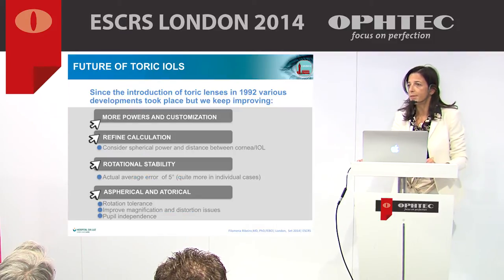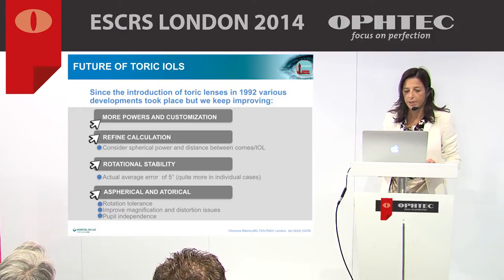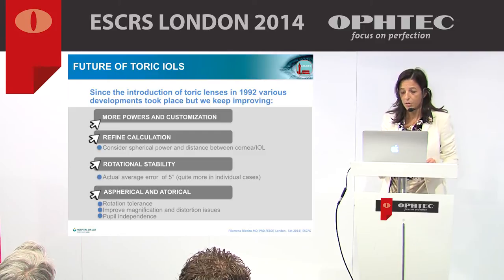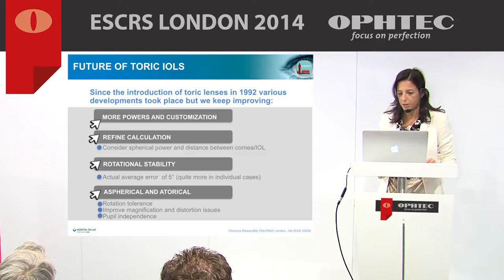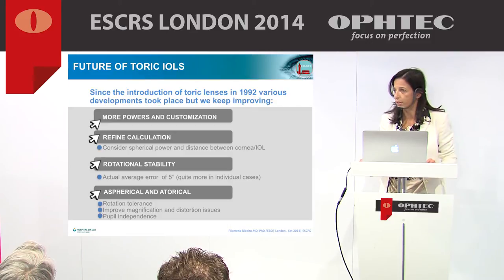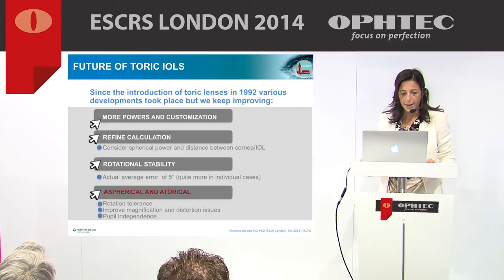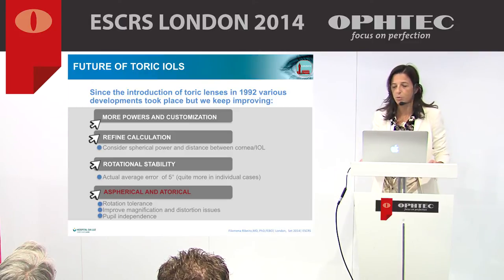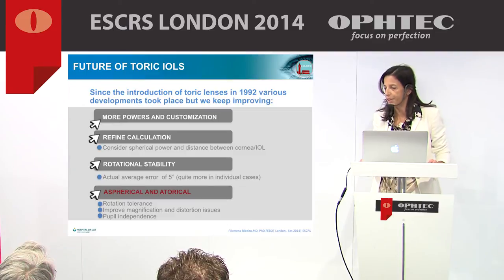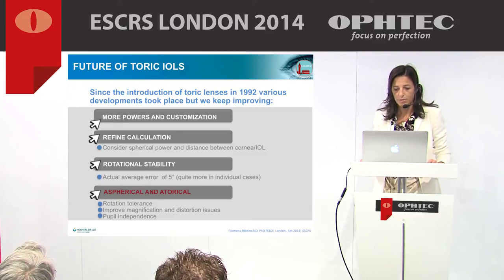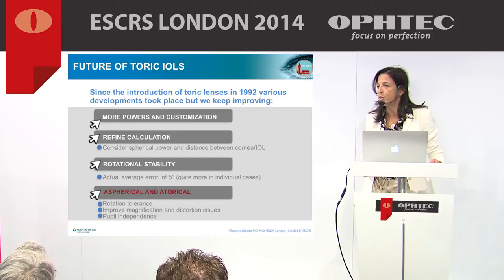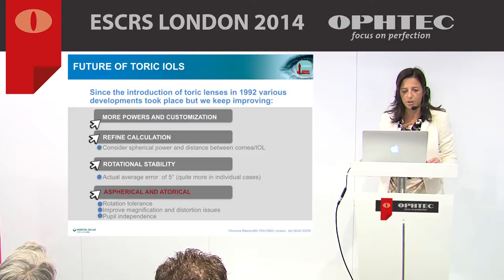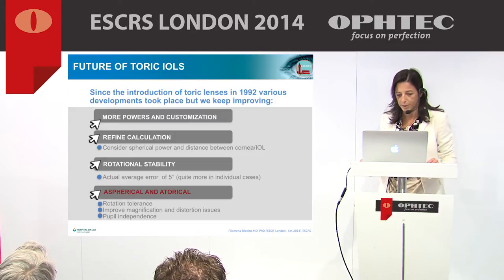Toric IOLs are still improving with more powers and customization, better cylinder calculation, and new IOL materials and designs which allow rotational stability. The introduction of aspheric IOLs was a great evolution in quality of vision. And now, the Precision IOL introduces a new concept: Atoricity, or the Transitional Connec-Toric IOL.